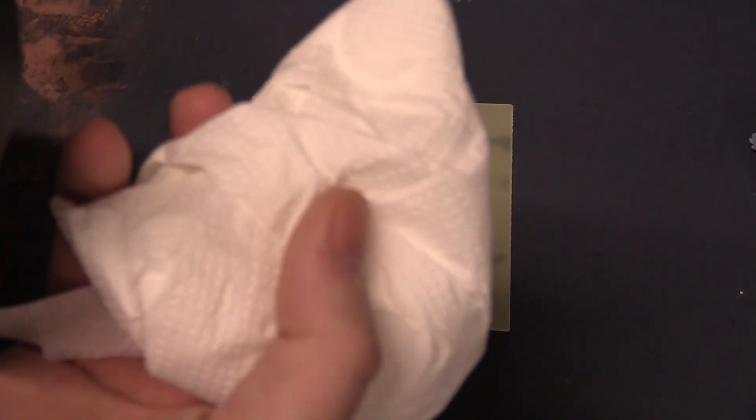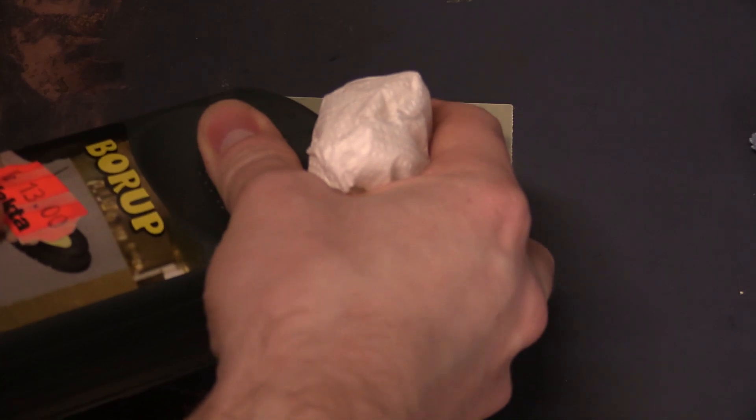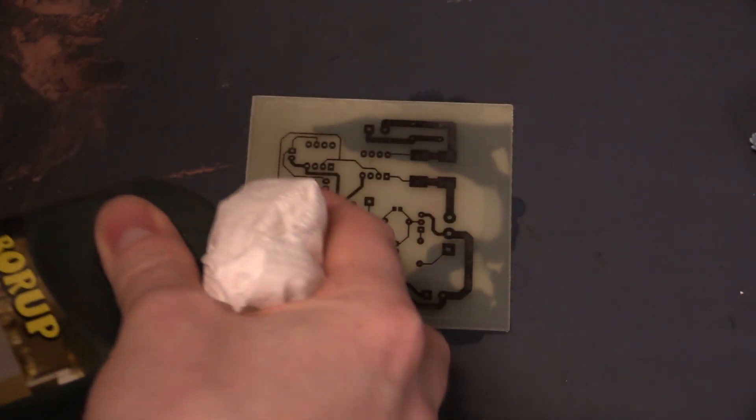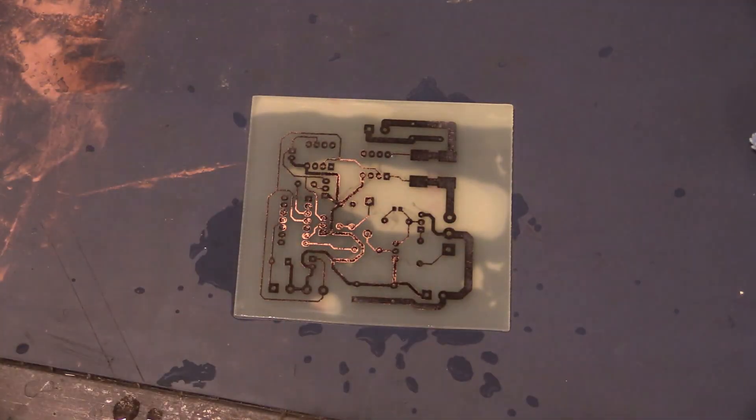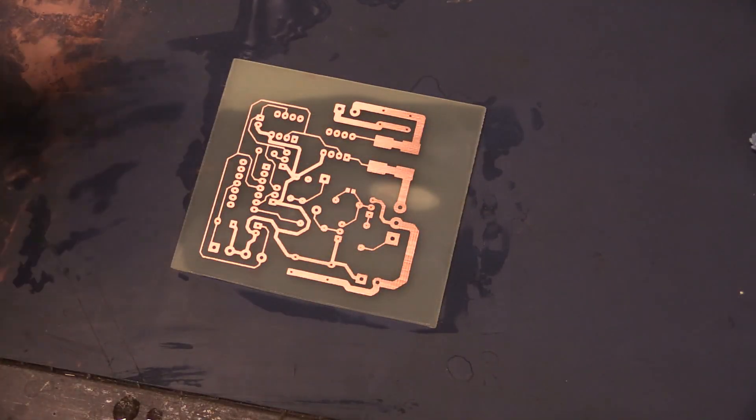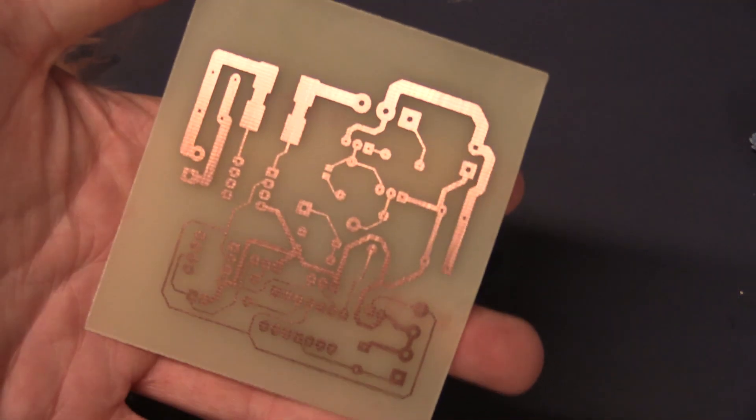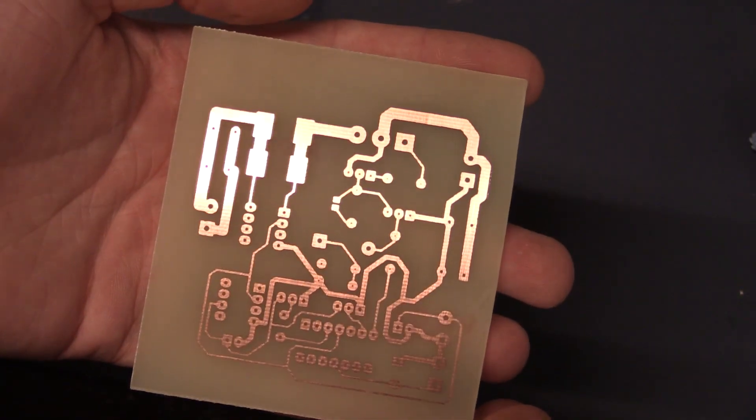But if you're not as patient you can just flood it with acetone and that will dissolve the toner. You can just wait about 30 seconds and then take your paper towel and wipe off the acetone and just let it flash off and it's ready to use. Make sure that your table can handle acetone. You don't want to dissolve your table as well. And here it is. The bare copper. I think it looks pretty nice.